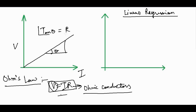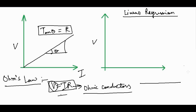In a practical situation, suppose you are given such a conductor and asked to find its resistance by plotting various V and I values on a graph. To find the resistance, you must calculate the slope of that graph.